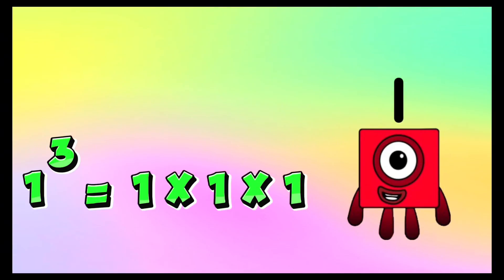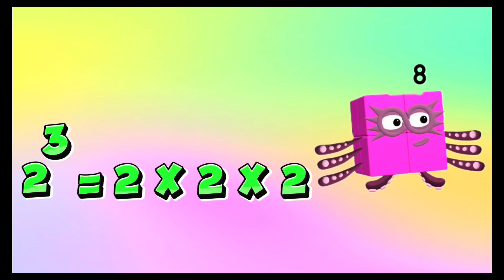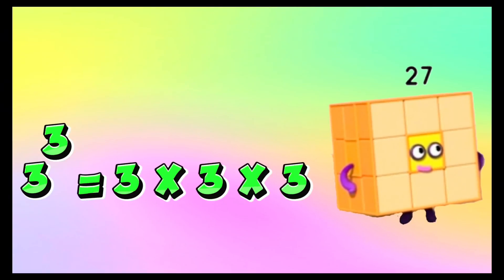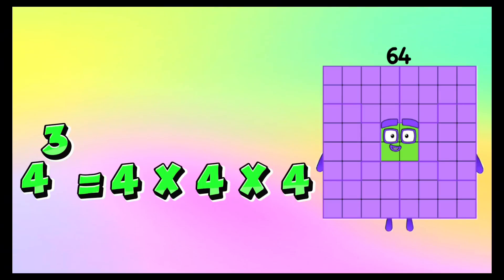Let's do a recap. One: one cube is equals to one times one times one. Eight: two cube is equals to two times two times two. Twenty-seven: three cube is equals to three times three times three. Sixty-four: four cube is equals to four times four times four.